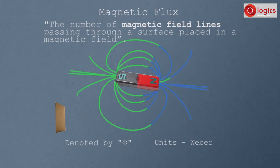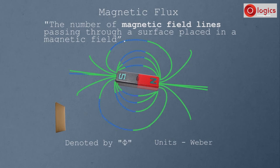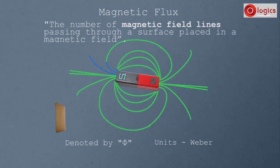Now place the cardboard outside the magnetic field. Observe — no magnetic line passes through the surface. Therefore, magnetic flux is zero. We can say magnetic flux depends on magnetic field strength and how the surface of the object is placed inside the magnetic field.